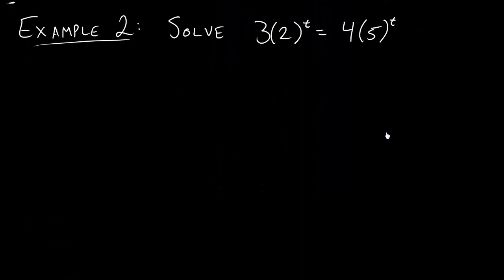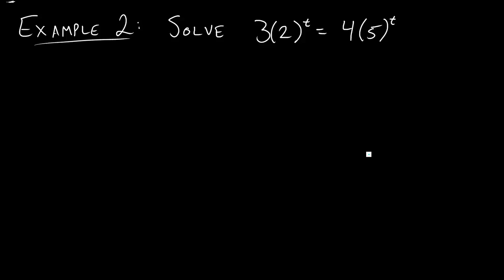So now notice we have our variable in two different places. And so we could try to isolate one. We could divide each side by the 4 like we did before, but then this side is still pretty bad. So what do we do in a situation like this? Well, the answer is still basically the same. We need to use the logarithm to get these variables out of the exponent. That's a big problem. So let's take the ln of each side and kind of see what we can do with it.